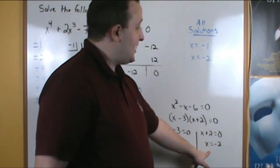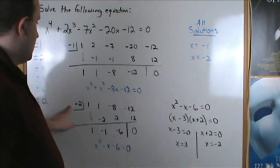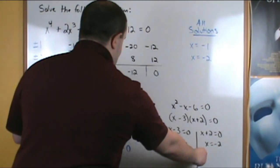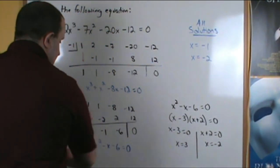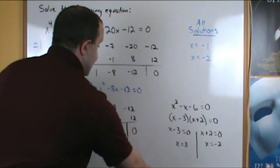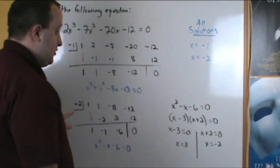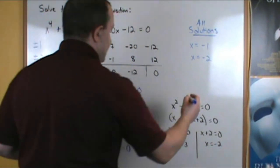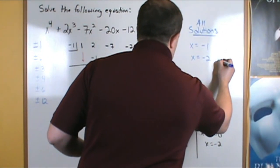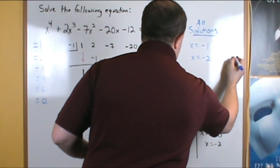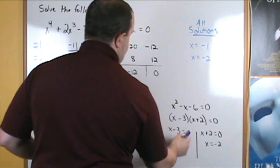Notice, we already have negative 2 as a solution. We get x equals negative 2 twice. So when we get that, when we get the solution repeated, say 2 times or 3 times, we say it has multiplicity. It has a multiplicity of 2 in this case, and then x equals 3.